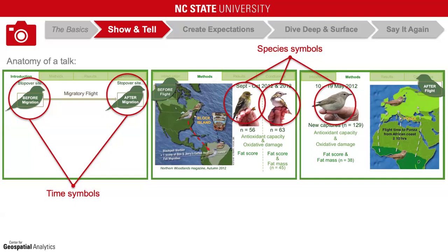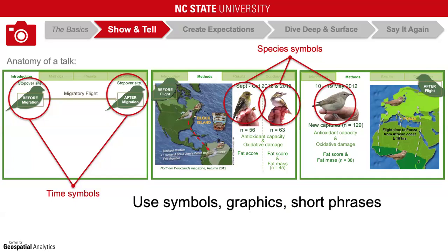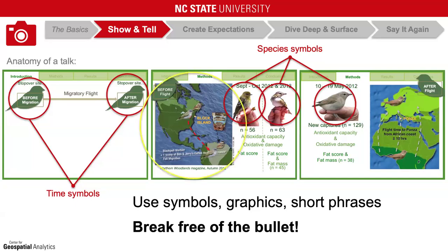So what are the take-home messages here? As much as possible, use symbols, graphics, and short phrases to make your points. Essentially, break free of the bullet. Now I'd like to focus on this graphic in the middle in particular, as an example of how to make images work for you and replace text that you might otherwise be tempted to put on the screen.